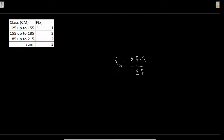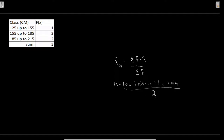Frequency here is the frequency of each class. Midpoint is the middle value of each class - sometimes it's quite clear, other times we need to calculate it. We can calculate the midpoint as the lower limit of class i+1 plus the lower limit of class i, divided by two.